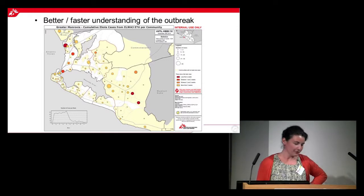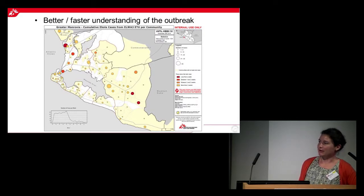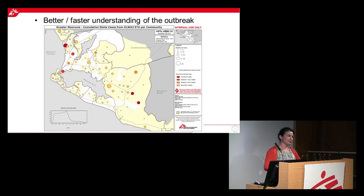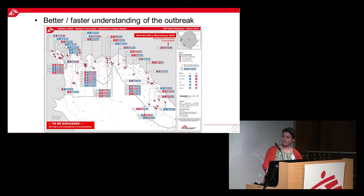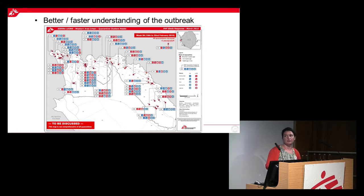This is the map we can produce to analyze the outbreak. You can see here the cumulative Ebola cases per community level — if you have good information and good location data, you can produce this kind of map. This is another type of map showing quarantine needs: each point is a quarantine house, in blue are needs that are met, and in red are needs which still need to be covered. This kind of map is also very useful for advocacy.